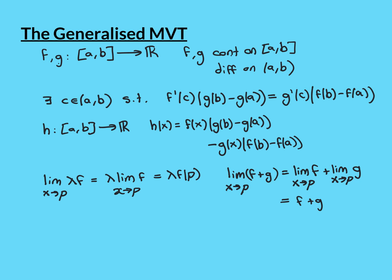The linearity of differentiation tells us that if you have two functions f and g that are both differentiable at some point, then if you take a linear combination of those two functions — some constant times f, plus some constant (which is the minus) times g — then that linear combination is also differentiable at that point p, and its derivative will be the constant in front of f times the derivative of f at p, plus the constant in front of g times the derivative of g at p.